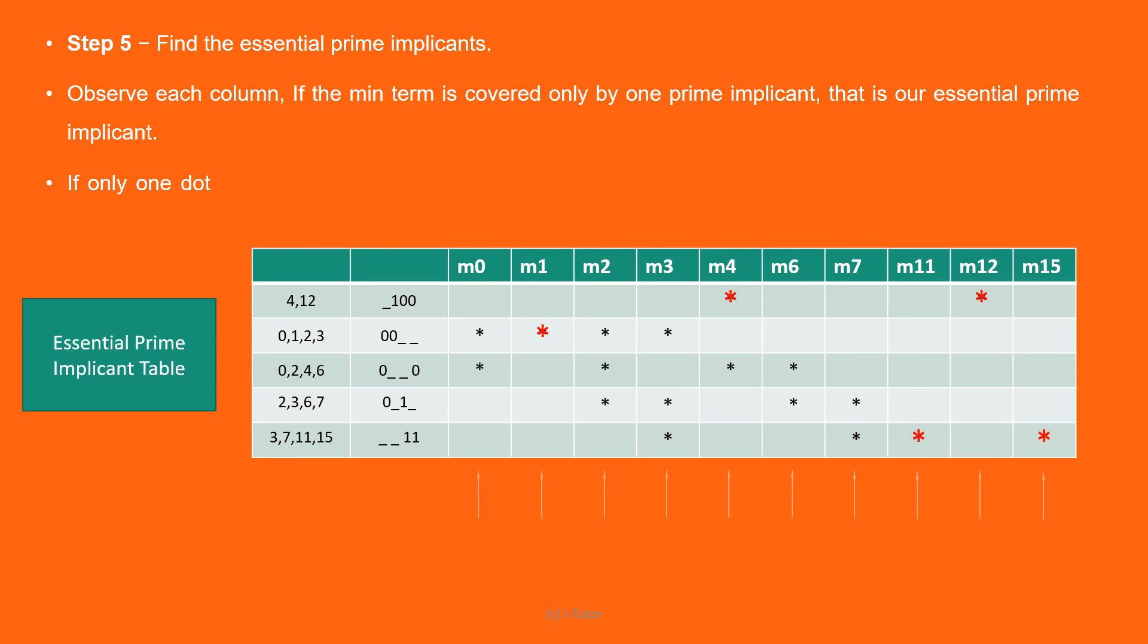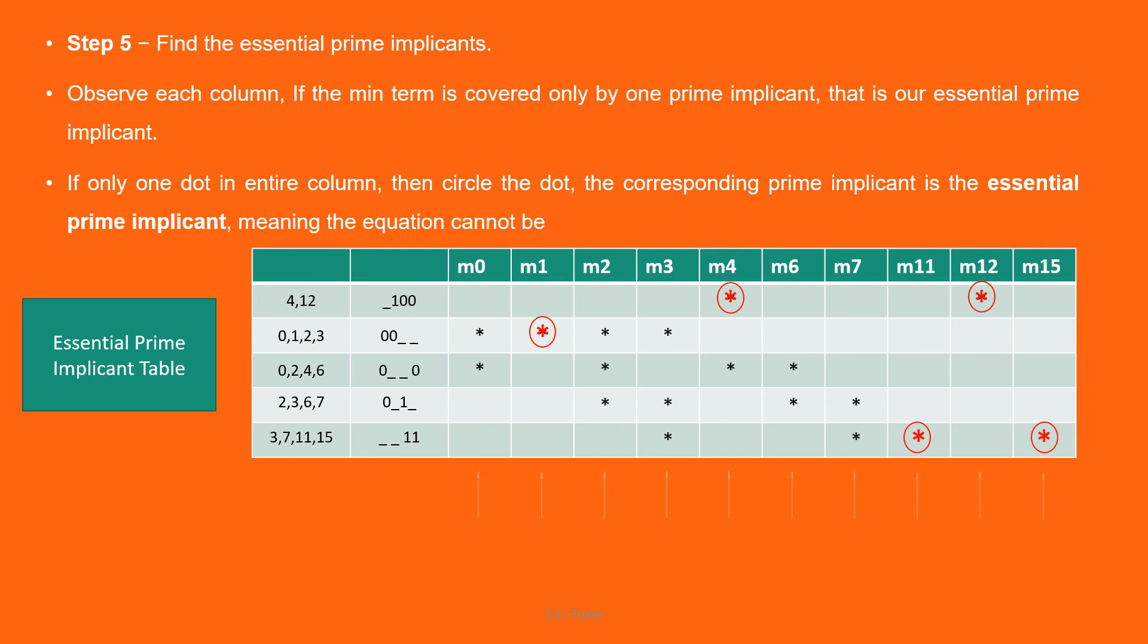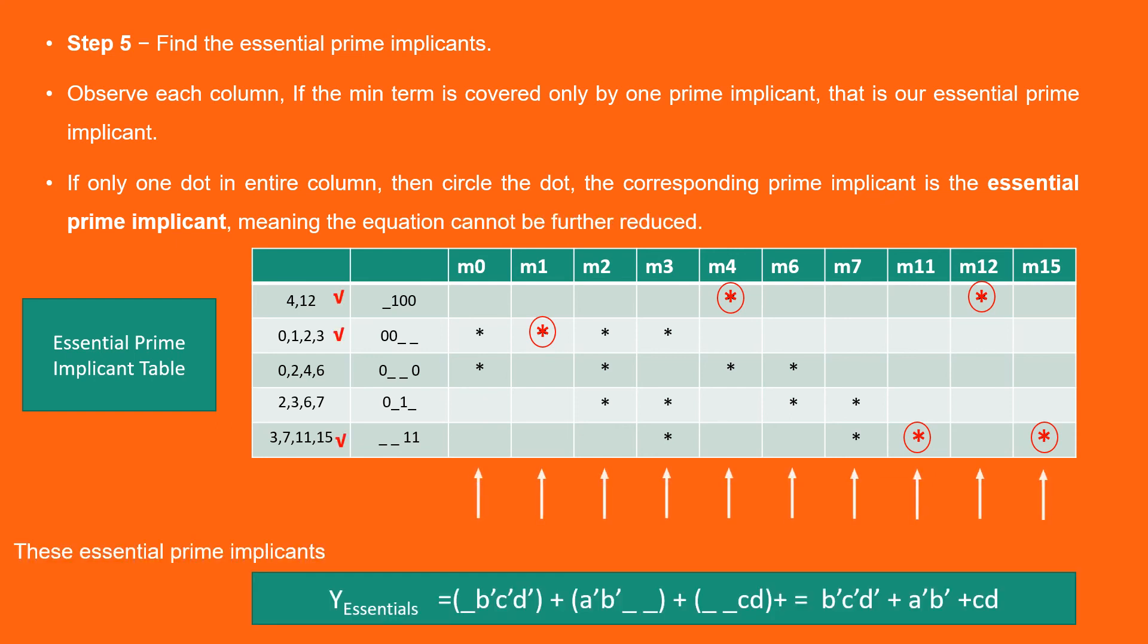Only one dot in entire column, then circle the dot. The corresponding prime implicant is the essential prime implicant, meaning the equation cannot be further reduced. These essential prime implicants will be part of the simplified boolean function.